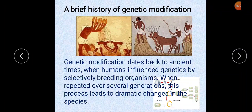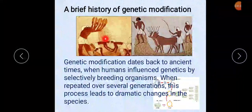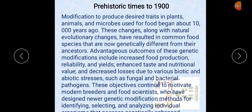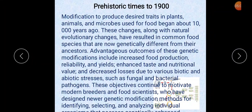Here is a brief history of genetic modification. Genetic modification dates back to ancient times when humans influenced genetics by selectively breeding organisms. When repeated over several generations, this process leads to dramatic changes in a species. Modification to produce desired traits in plants, animals and microbes used for food began about 10,000 years ago, resulting in common food species that are now genetically different from their ancestors.